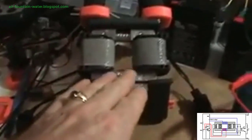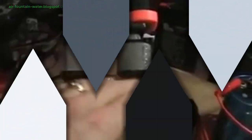Initiating the circuit requires a brief touch of a 12-volt source to the output terminals or waving a permanent magnet close to the red and blue coils. Stefan Levin suggests an alternative involving a piezo crystal from a lighter, connected to an extra coil, to generate the necessary voltage spike. Once activated, the system becomes self-sustaining, raising the challenge of devising a means to switch it off.